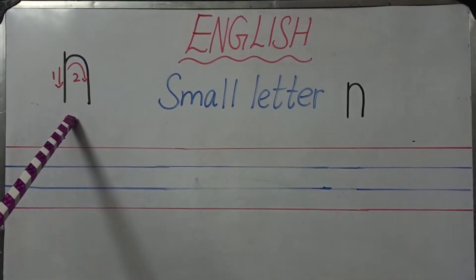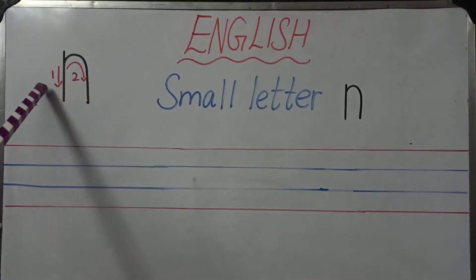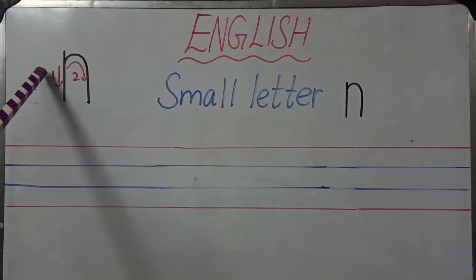Here we have small letter N formation. One and two. We have two formations. Let's see the number one formation.